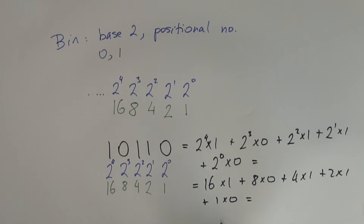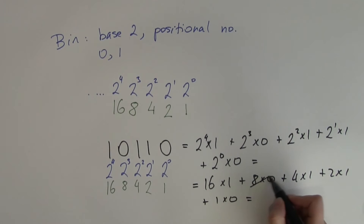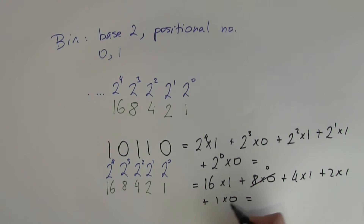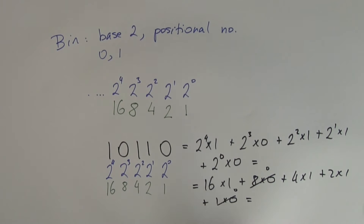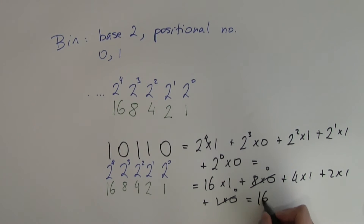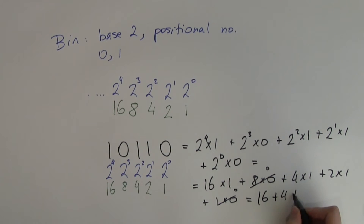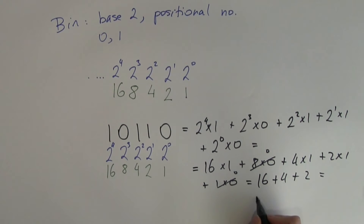Now, 0 times any number always gives you 0, so those terms equal 0 and we don't need to take them into account when adding up. The numbers I need to add are 16 plus 4 plus 2, and that is 22.